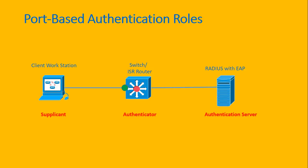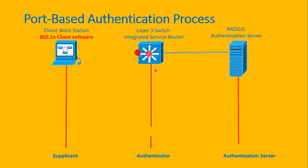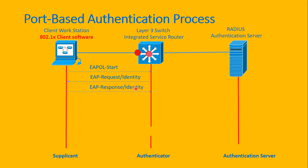Those are all the roles related to port-based authentication. As we have already configured the switch with port-based authentication using IEEE 802.1X, the access port that connects to the client workstation will be in unauthorized status. As soon as the client workstation connects to the access port, the client must be installed and configured with the 802.1X client software. The client will send EAPOL Start to the switch. EAPOL stands for Extensible Authentication Protocol Over LAN. The switch will send the EAP Request Identity back to the client, and the client will respond with EAP Response Identity to the switch.